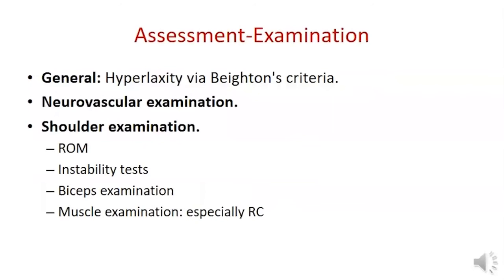Patient examination should start with general examination for ligamentous hyperlaxity via Beighton criteria, then neurovascular examination, then shoulder examination including range of motion compared to the normal side, special instability tests, biceps examination for SLAP lesion, and muscle examination for rotator cuff tears.